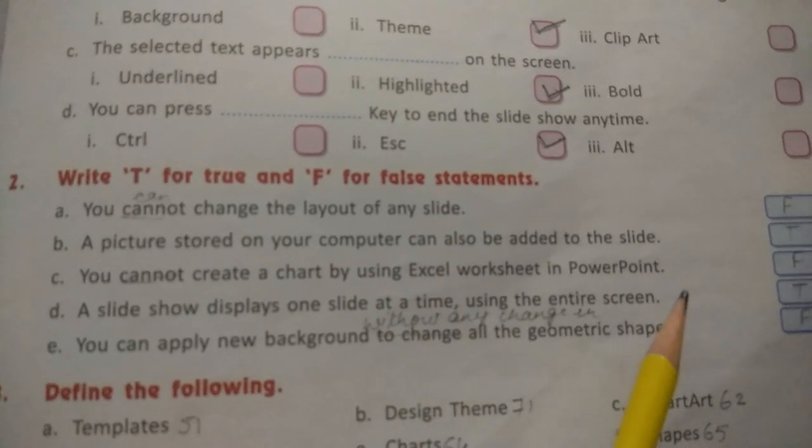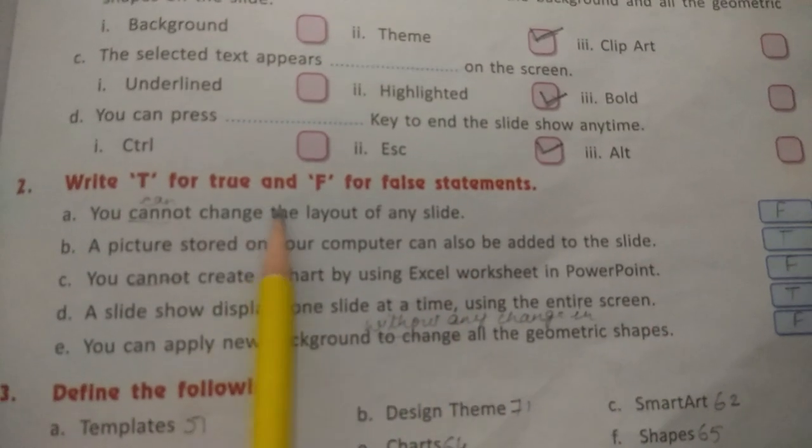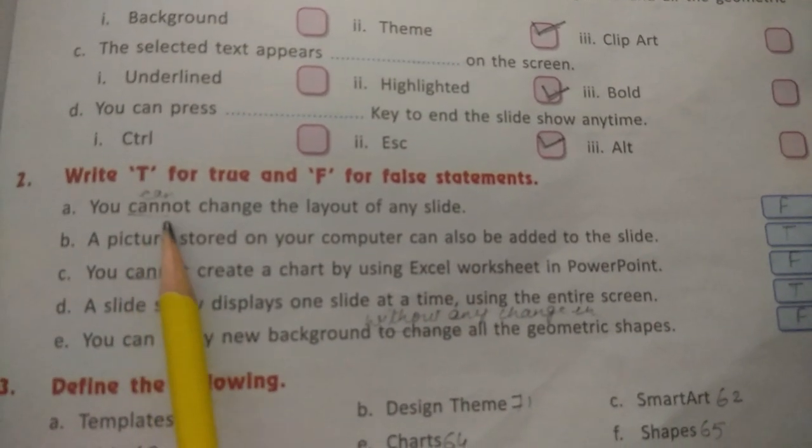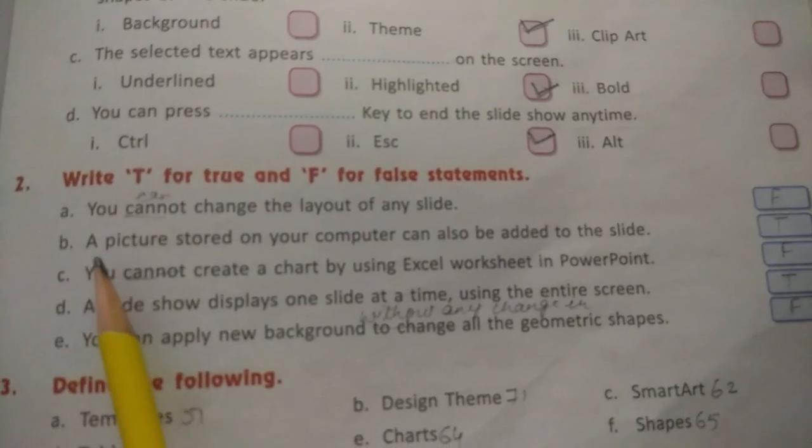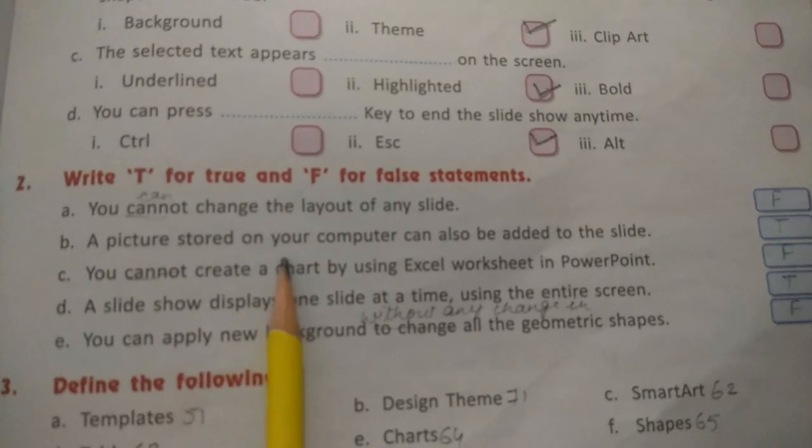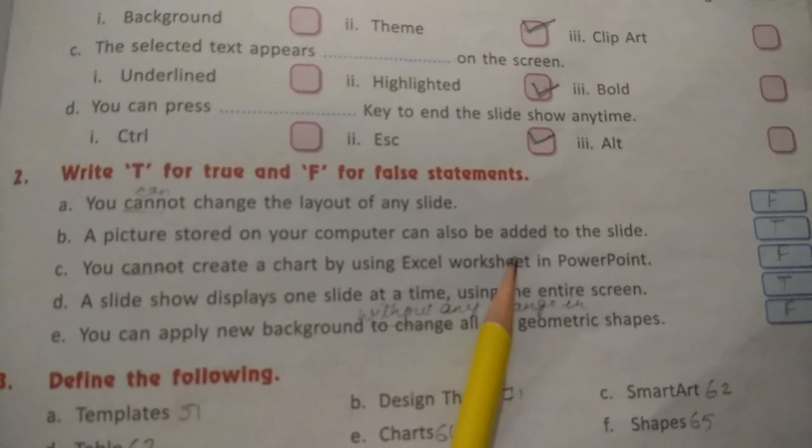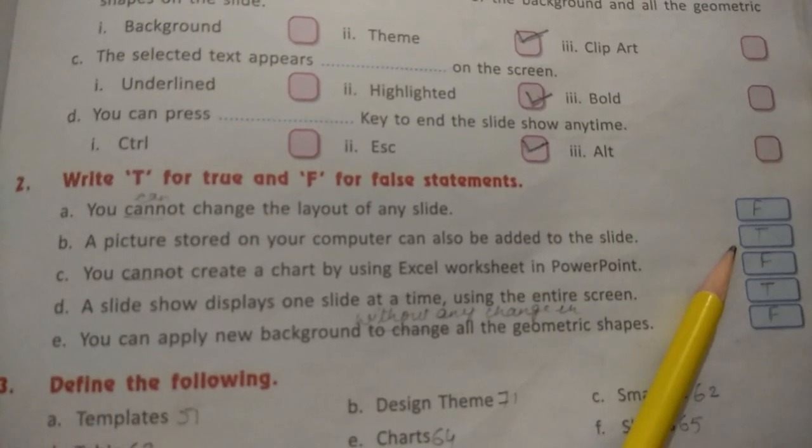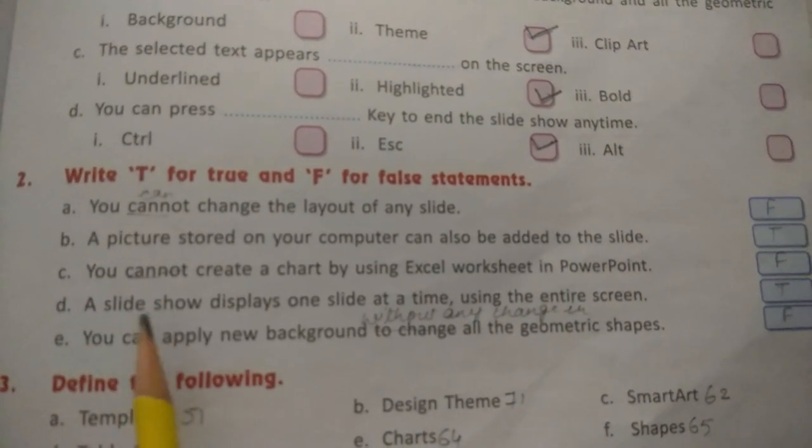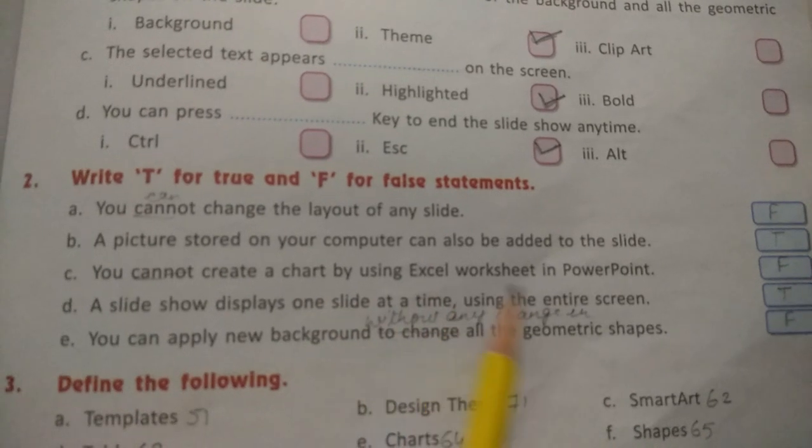Write down F, and for the true statement underline cannot and write down can. B. A picture stored on your computer can also be added to the slide - write down T true. You cannot create a chart by using Excel worksheet in PowerPoint - write down F false.